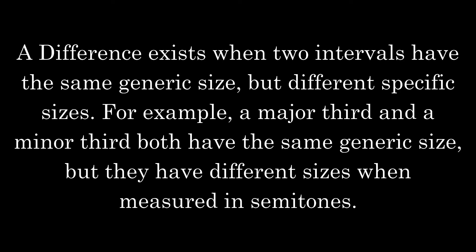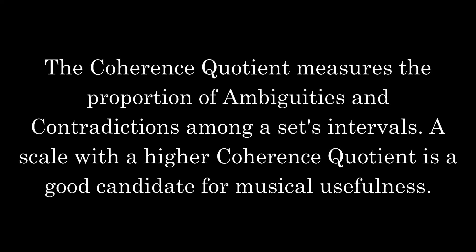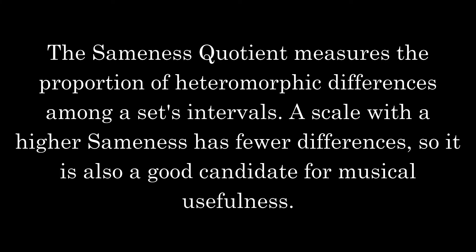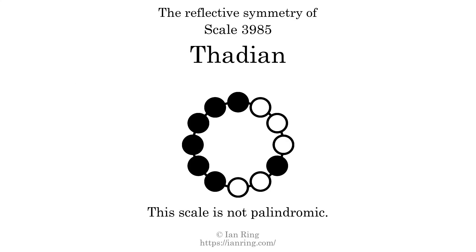A difference exists when 2 intervals have the same generic size but different specific sizes. For example, a major 3rd and a minor 3rd both have the same generic size, but different sizes when measured in semitones. The number of differences in this scale is 86. The coherence quotient measures the proportion of ambiguities and contradictions among a set's intervals. A scale with a higher coherence quotient is a good candidate for musical usefulness. The coherence quotient is 0.357.